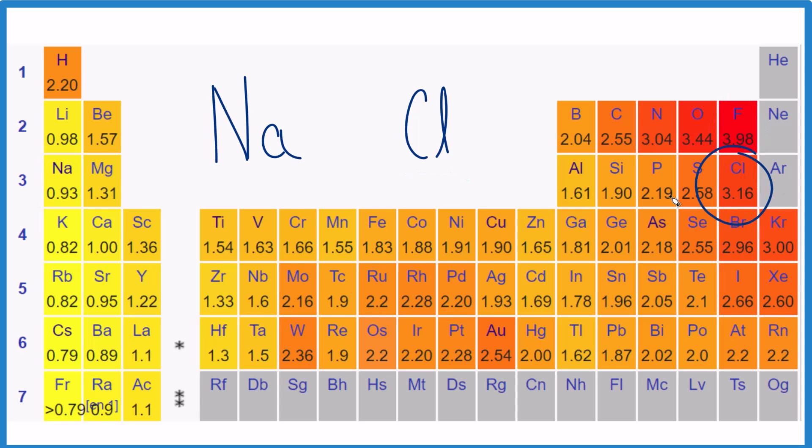We could also find chlorine here and subtract 3.16, so 3.16 minus 0.93, and we get a difference of 2.23.